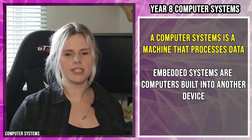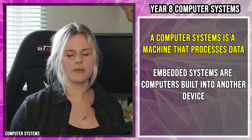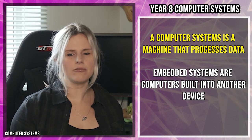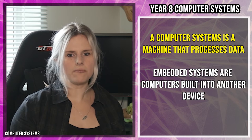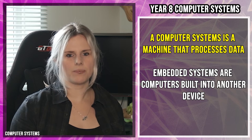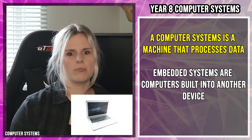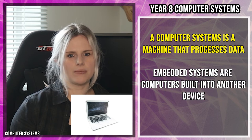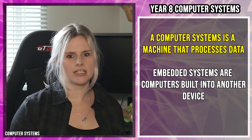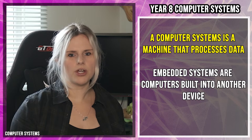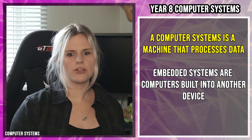A computer system is a machine that processes data. A lot of people when they think of computer systems just think of desktop computers, but mobile phones, games consoles, laptops, and Chromebooks are all types of computer system. So the word computer doesn't just mean desktop.